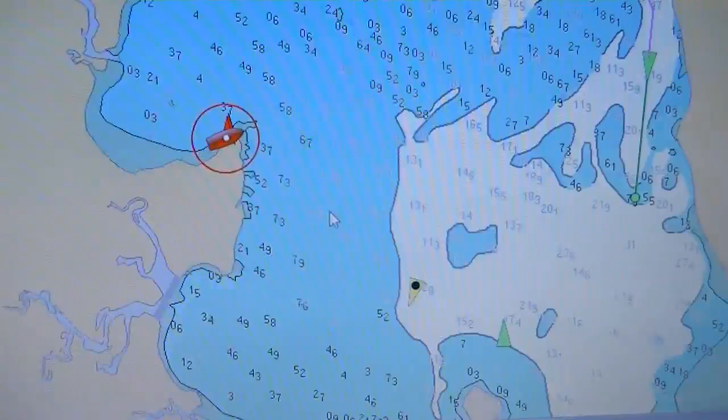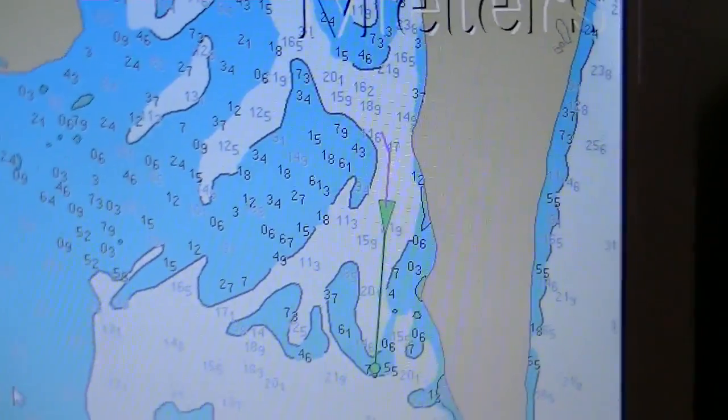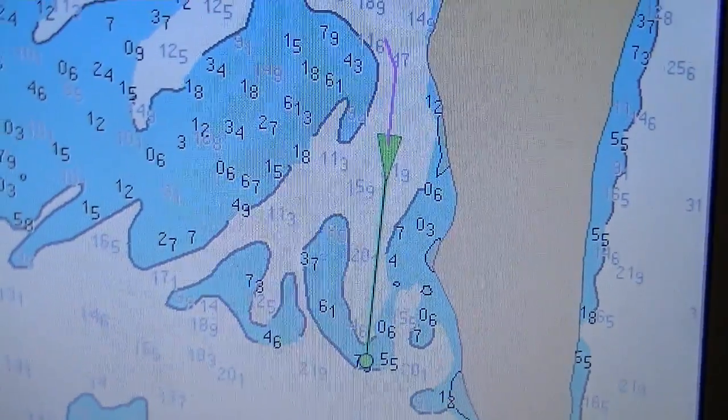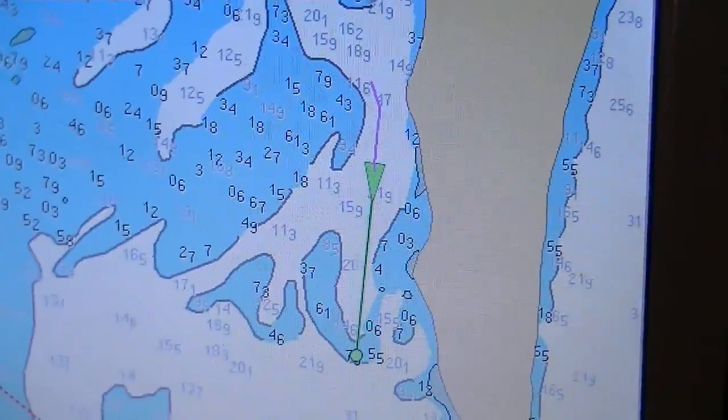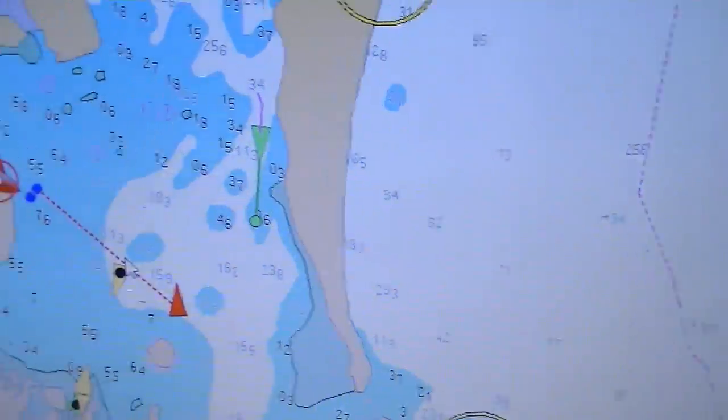We'll zoom out and we will have a look at Morton Bay. Over there we have a ship underway coming down past Tangalooma heading for the Brisbane River.